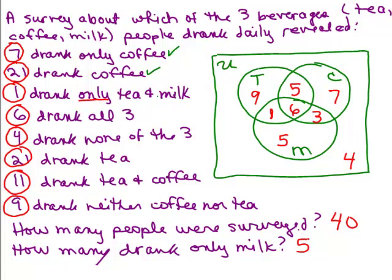One drank only tea and milk. All right, so only tea and milk means they liked both tea and milk. So I have to look here, but it says only. I don't get to include the coffee people. So that's the one. Good. Six drank all three. That's the intersection of all three drinks. That's in the center is six. Looks good. Four drank none of the three. Well, that would be out here and I've got four, so that looks good. Twenty-one drank tea. So you look in the set of people that drank tea and you add up these four numbers and that does add up to 21. Looks good.